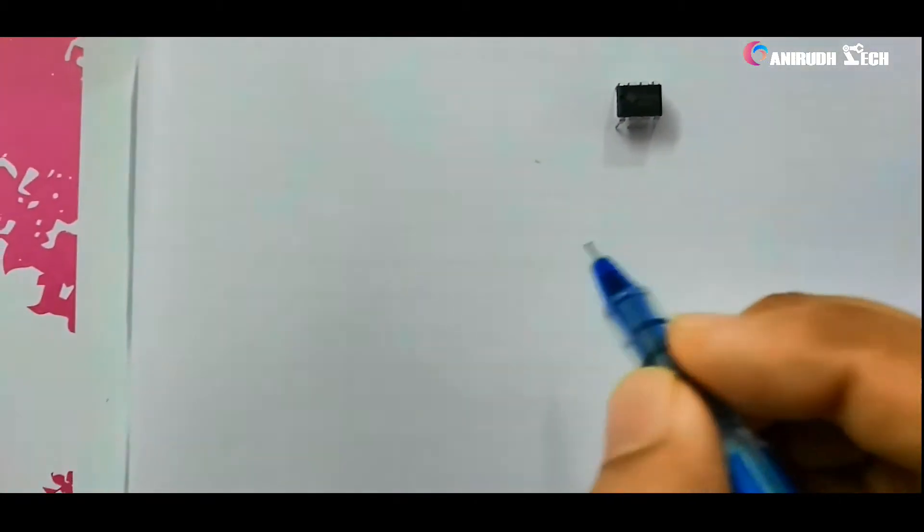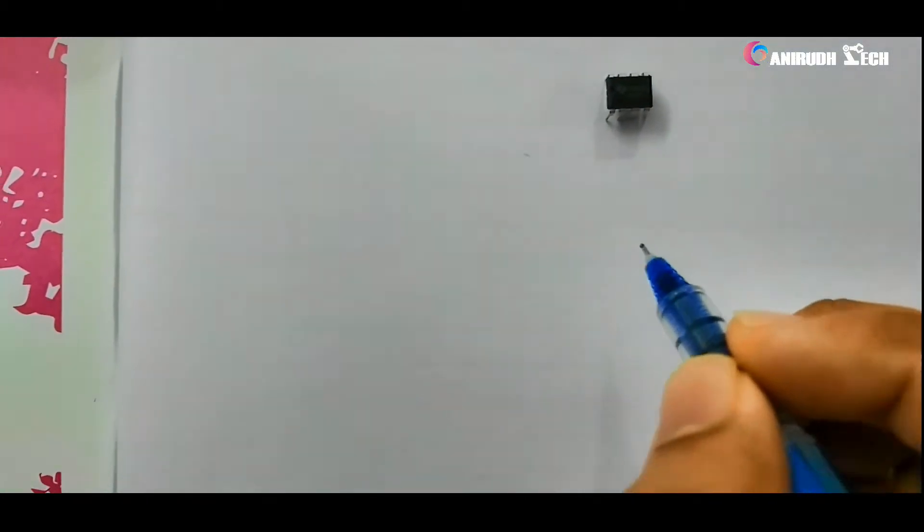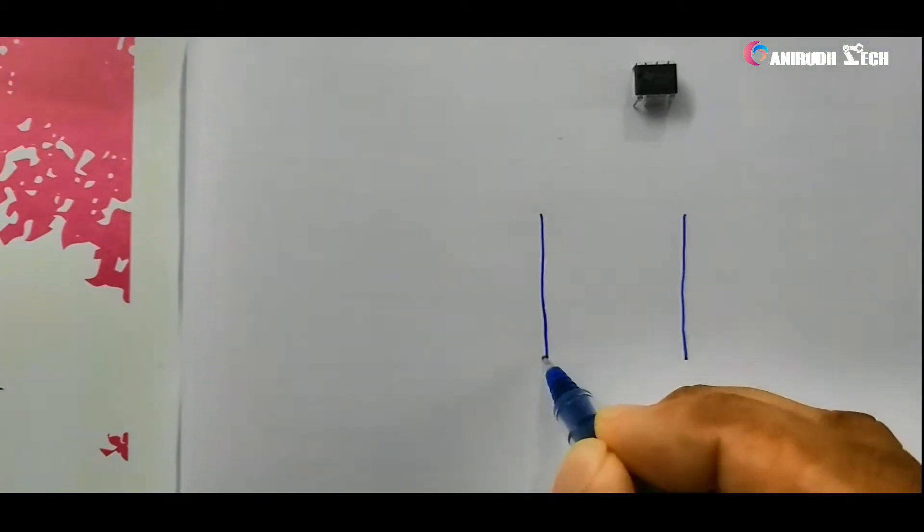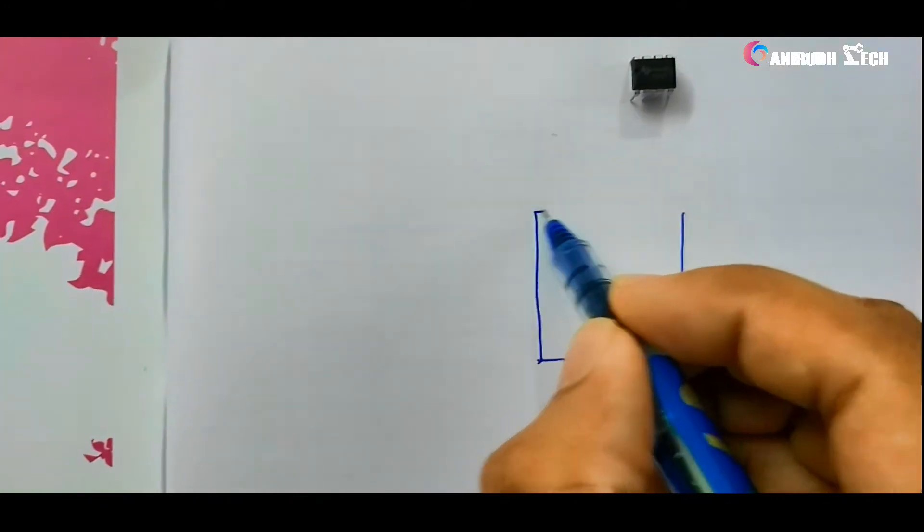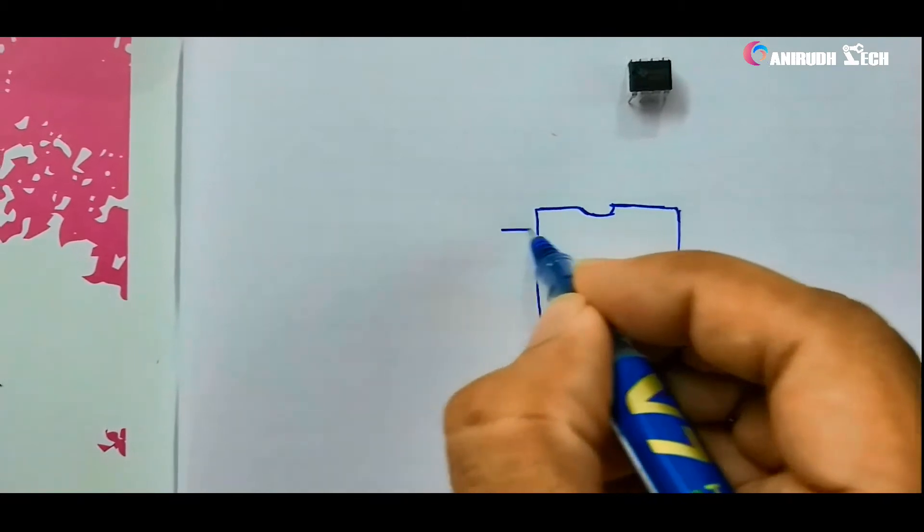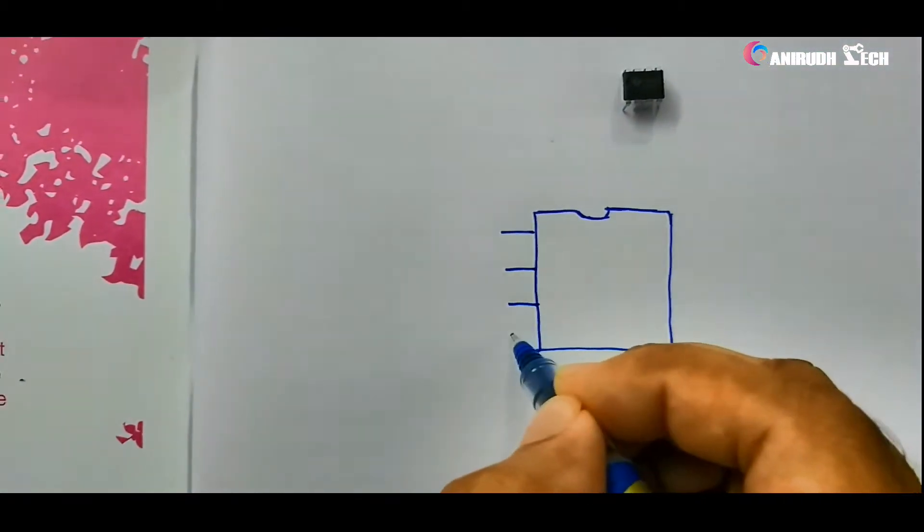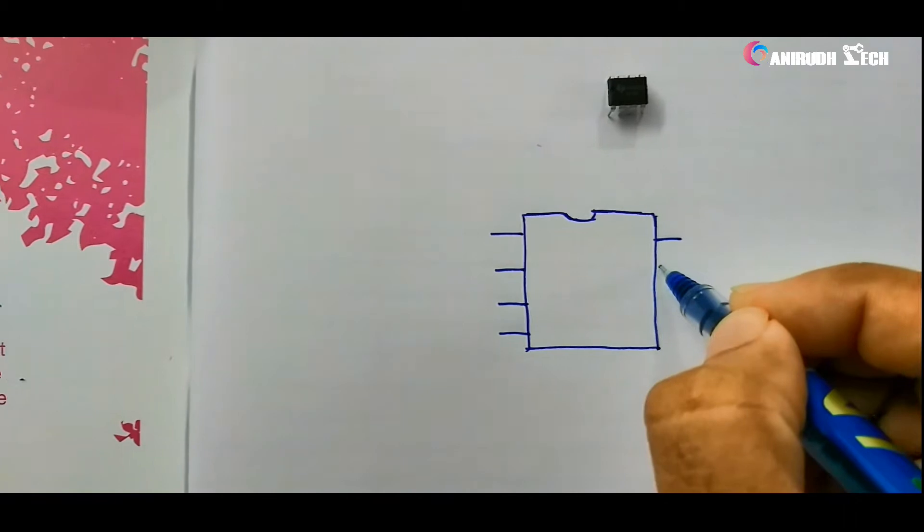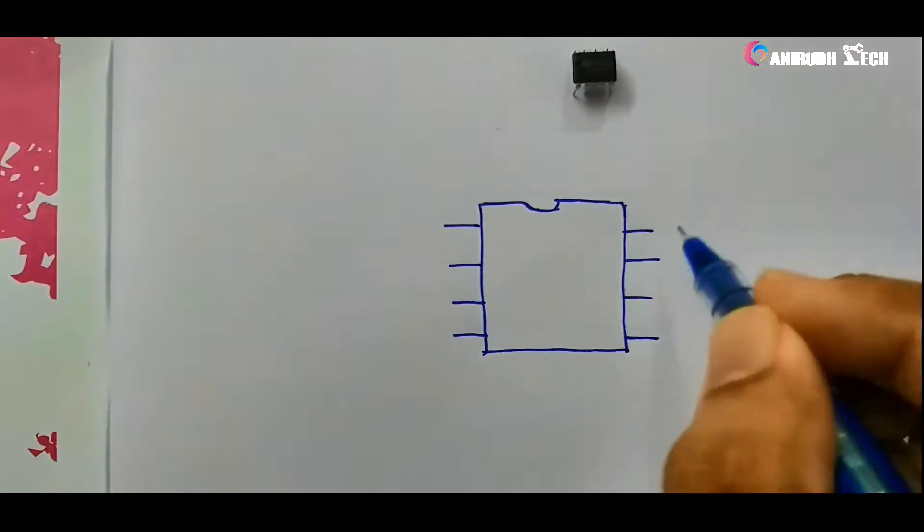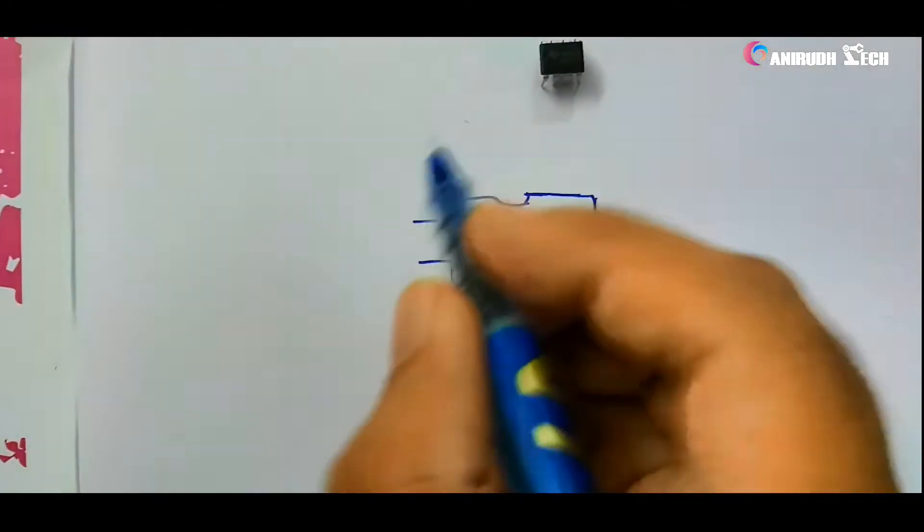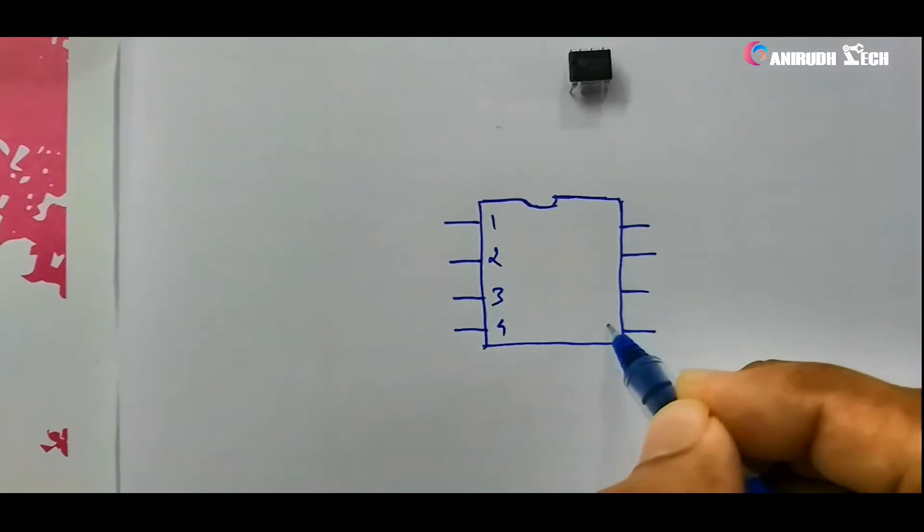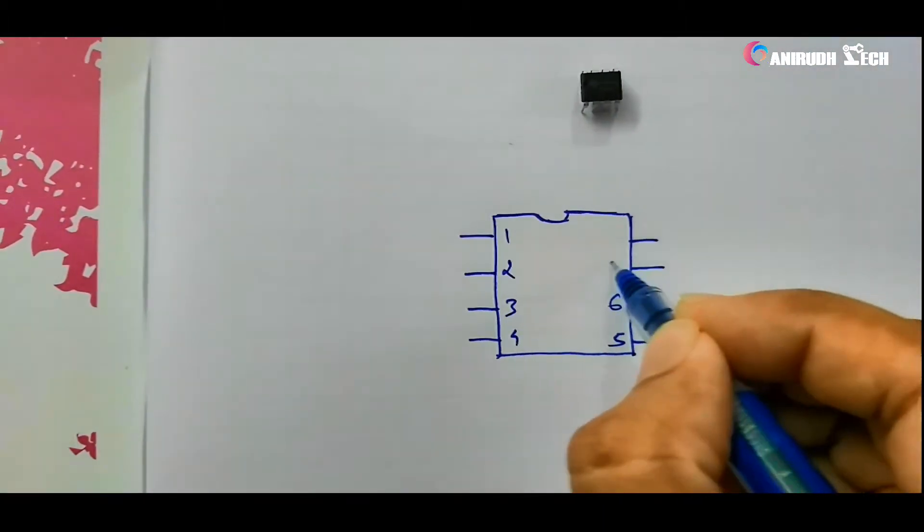First we can understand the legs or pins of our 555 IC. Let's consider this as our IC. Here is a small notch. One, two, three, four. Alright, you see it has 8 legs. And the first one: one, two, three, four, and counting from here, five, six, seven, and eight.